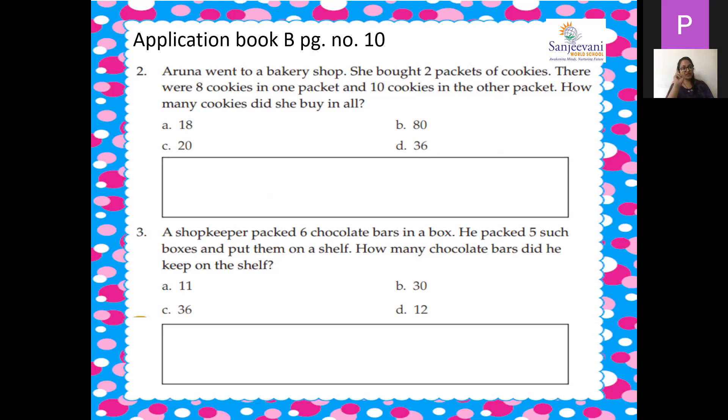First I will do the multiplication of one packet and then I will add total both the packets. So first packet she brought 1 packet 8 cookies. So 1 times 8 is 8. Then she brought other packet which has 10 cookies. So 1 into 10 is 10.